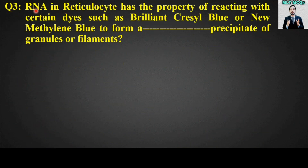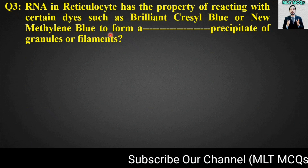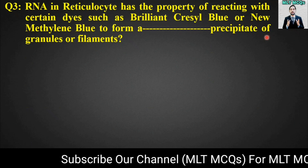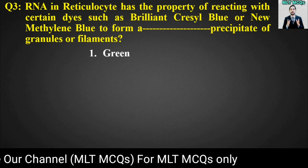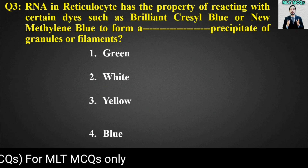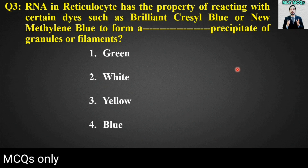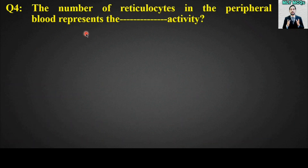MCQ number three: RNA in reticulocytes has the property of reacting with certain dyes such as brilliant cresyl blue or new methylene blue to form a blank precipitate of granules or filaments. Options are: green, white, yellow, or blue. The right answer is option number four — blue precipitate of granules or filaments.